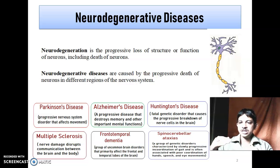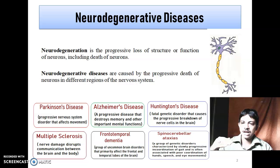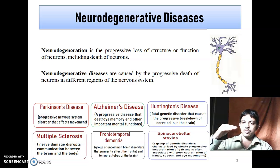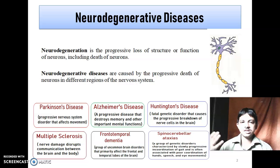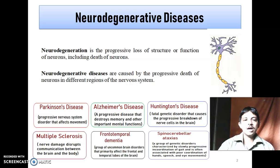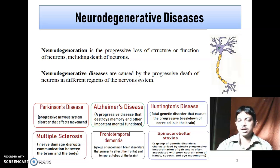The dopaminergic system is decreasing — there is an imbalance between the dopaminergic and cholinergic systems. In the case of Alzheimer's disease, it is due to the loss of memory function. As we discussed the pathogenesis last class, today we will discuss the different drugs that are available.